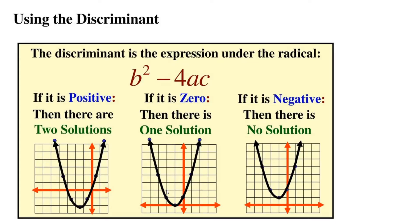Here's a picture of what would happen when we graph different quadratic equations depending on how many solutions we have and what the value of the discriminant is. If our discriminant is positive, you're going to have a graph that intersects the x-axis in two places. If the discriminant is equal to zero, it's going to intersect the x-axis in one place, so you have one solution. If your discriminant is negative, when you graph the quadratic equation, it's not going to intersect the x-axis at all, so you're not going to have any solutions.